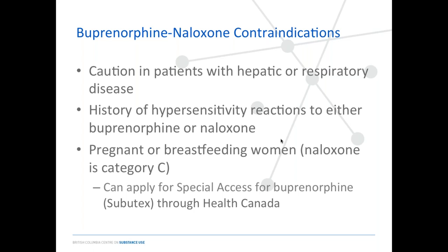Technically if someone is pregnant or breastfeeding, Health Canada has a Category C classification for the naloxone component — meaning we don't know enough about whether it's potentially dangerous to the fetus. As a result, the suboxone formulation is technically contraindicated during pregnancy per Health Canada. However, no studies have ever shown that naloxone was dangerous in pregnancy. If someone's already on suboxone, you could keep them on it as off-label use, or formally apply for the buprenorphine-only formulation Subutex through Health Canada's special access request form. Some colleagues have found this straightforward; others have had difficulty with it — if needed, call the RACE Line for support.